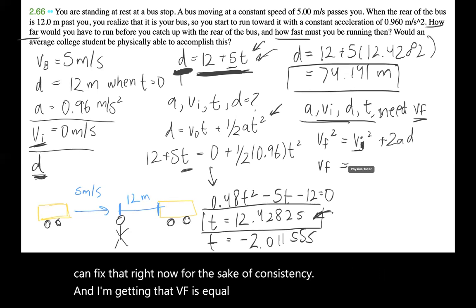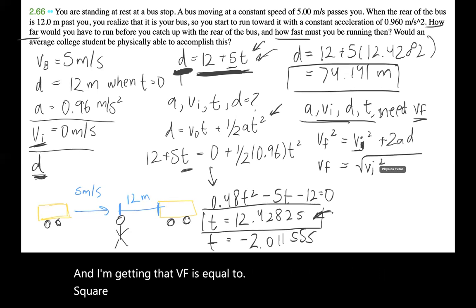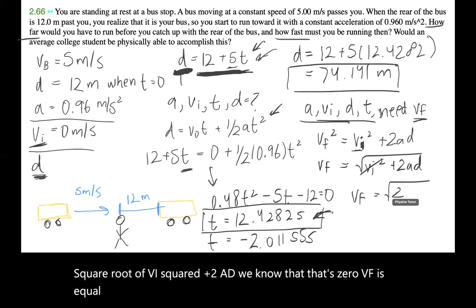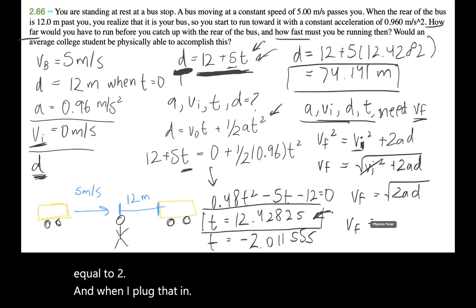So vf squared equals v naught squared, or vi squared, plus 2ad. Just v naught and vi are the same; I'm just using different variables, but I can fix that right now for sake of consistency. And I'm getting that vf equals square root of vi squared plus 2ad. We know that that's zero, so vf equals square root of 2ad. And when I plug that in, I am getting vf equals 11.931 meters per second.